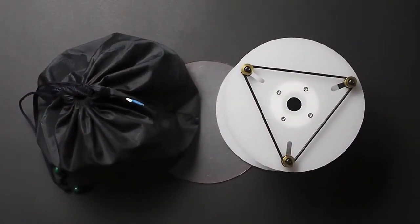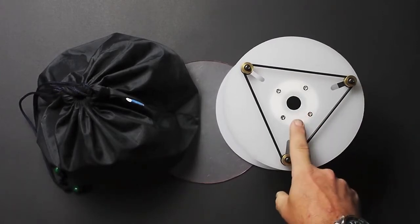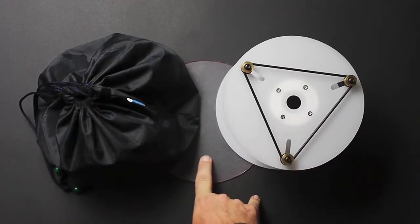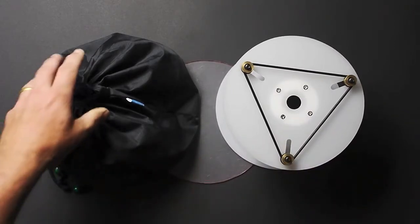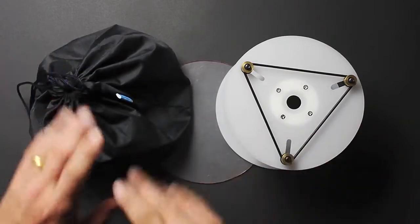I'm going to do a quick overview of how you use the Nimbus. When you receive a Nimbus, you'll have the main dome, a template for cutting out backgrounds, and a carry bag that holds everything together.